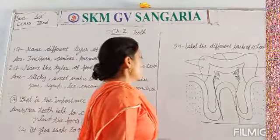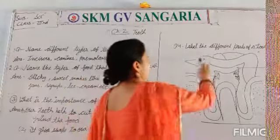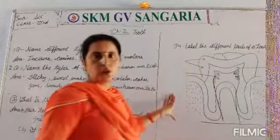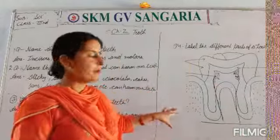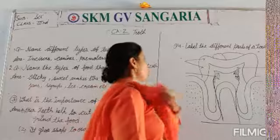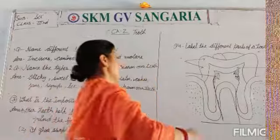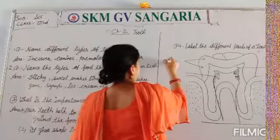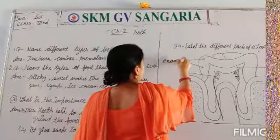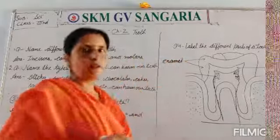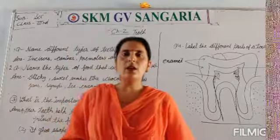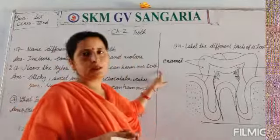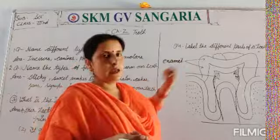Question number 4: label the different parts of our tooth. This is the structure of our tooth. The first part is enamel. The crown of the tooth is covered with a hard substance that is called enamel.